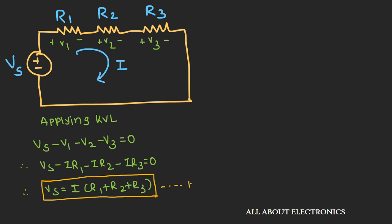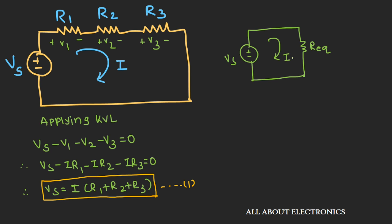Let's call this equation number 1. Now, if we replace these three resistors by their equivalent resistance, the circuit will have one voltage source Vs connected with an equivalent resistance — let's call that R equivalent. The current flowing through the circuit, I, will remain the same. So we can write Vs = I × R equivalent. Let's call this equation number 2.